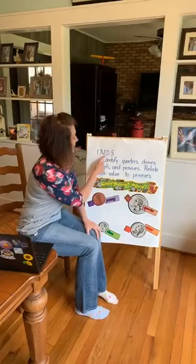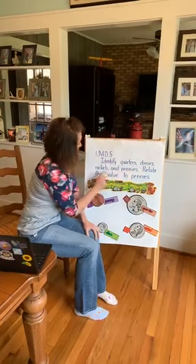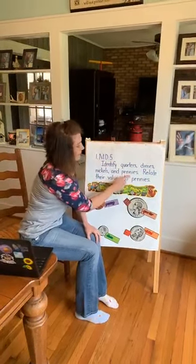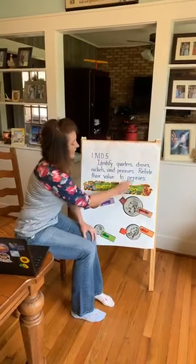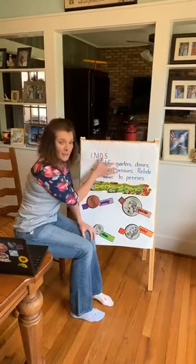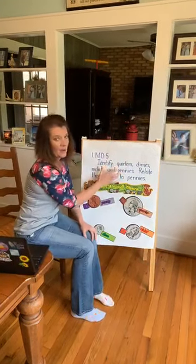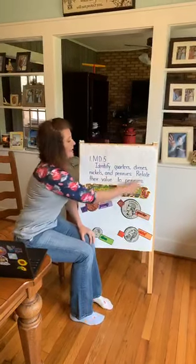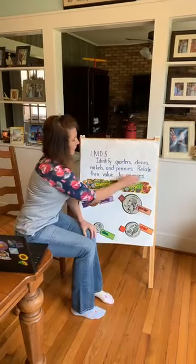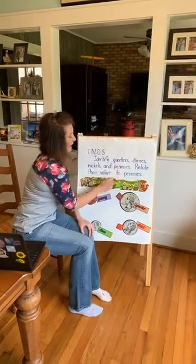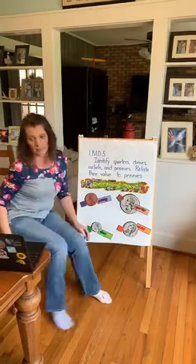Our goal is still 1MD5: identify quarters, dimes, nickels, and pennies. Relate their value to pennies. The last two days, we've really talked about identifying these coins, what their values are, and talking about characteristics. Today, we're going to really focus on relating the value of the quarter, the dime, and the nickel to pennies.